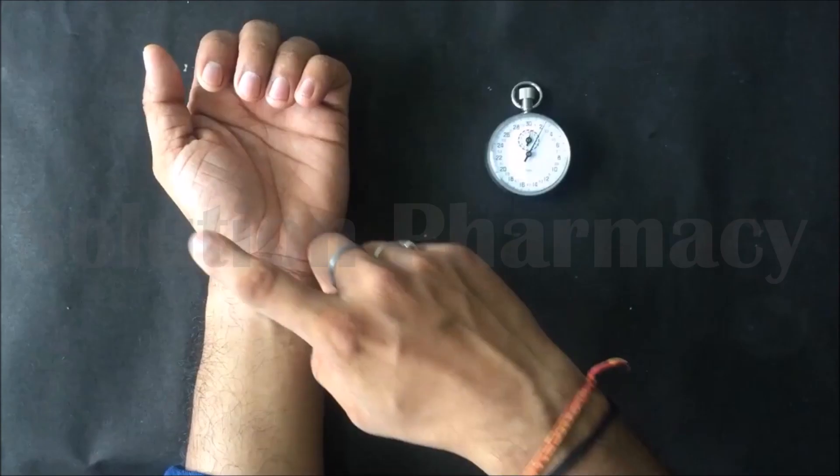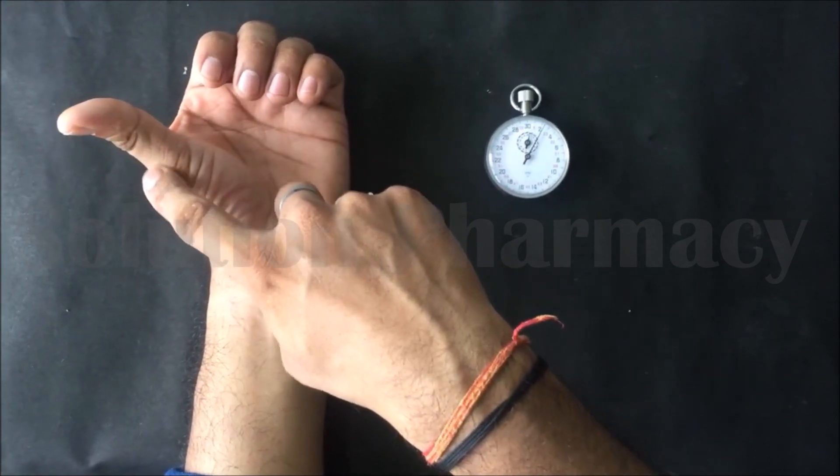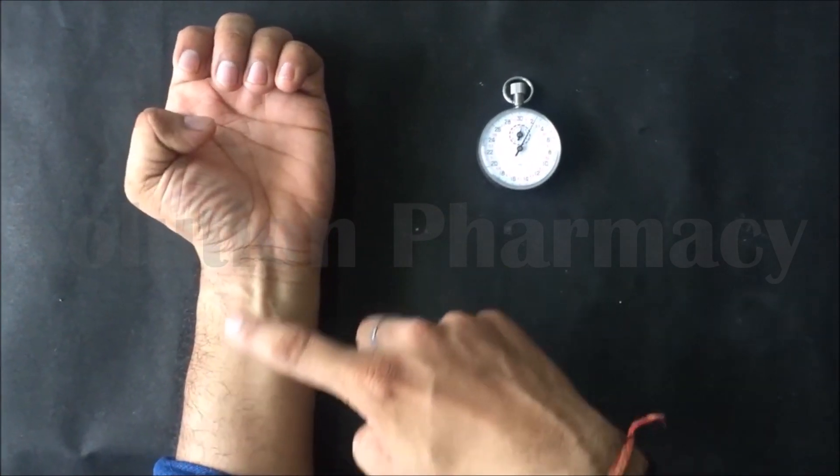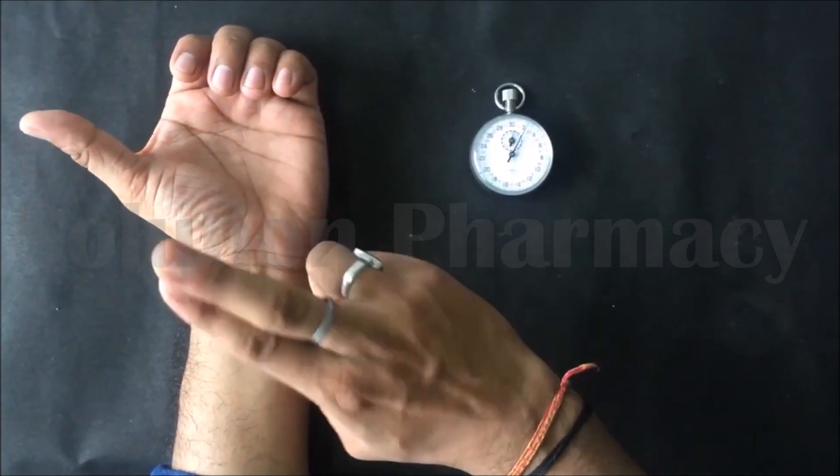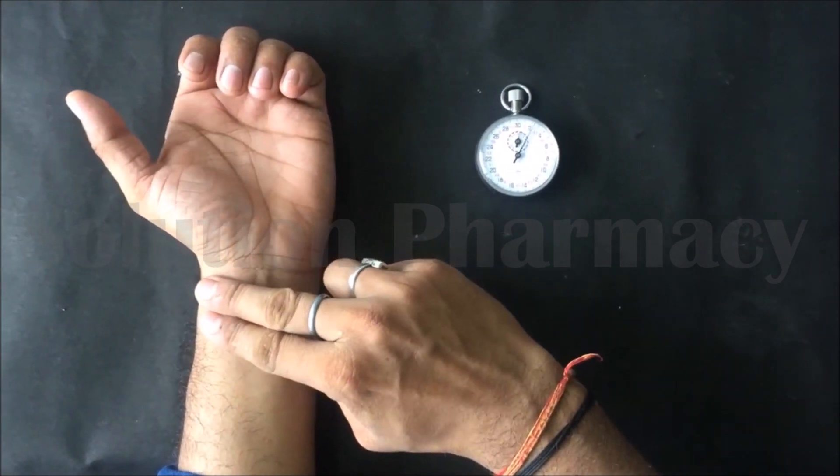Now place the tip of our index and middle finger on the thumb side of the wrist, and then push slightly to feel the pulse.